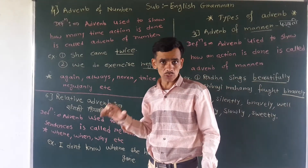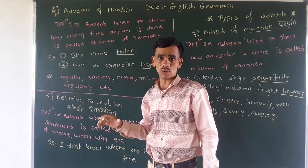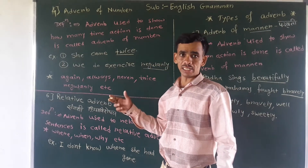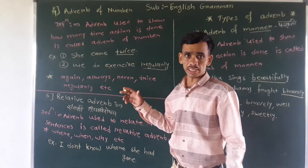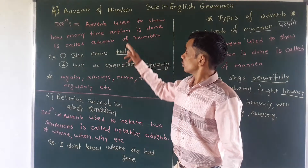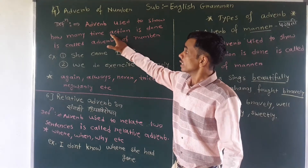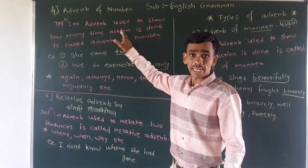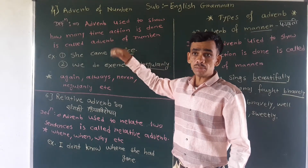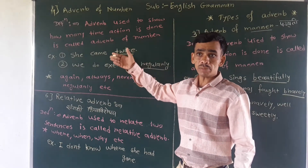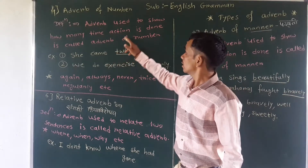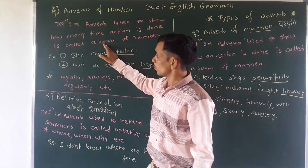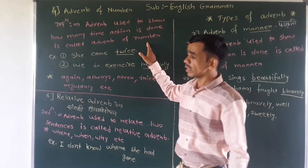And jo action ho na hi hai kriya — koi bhi jo kriya jeshi — playing, reading, writing. Hey jo kriya hai. Then how many times the action is done — kitne time hona hi action? It's called adverb of number.